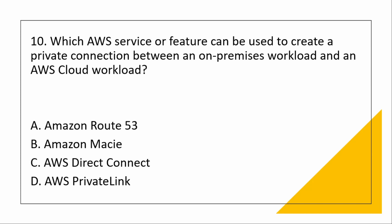Which AWS service or feature can be used to create a private connection between an on-premises workload and an AWS cloud workload? Route 53 is a health check service; Macie is a data protection service. The key difference: when you want a private connection within AWS, use AWS PrivateLink. When you want a private connection between on-premises and AWS cloud, use AWS Direct Connect.